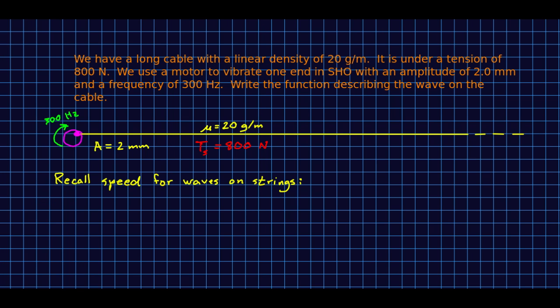Let's put this all together in an example. So here we have a cable, and we're using a motor to drive the end of it at 300 hertz with an amplitude of 2 millimeters. And we know the linear density and the tension of the cable, and recall a couple of lectures ago, we saw that the wave speed on a string or a cable or anything or wire is the square root of the tension over the linear density. So if you work that out for this one, we're going to want to know this wave speed. It's going to be useful to us.